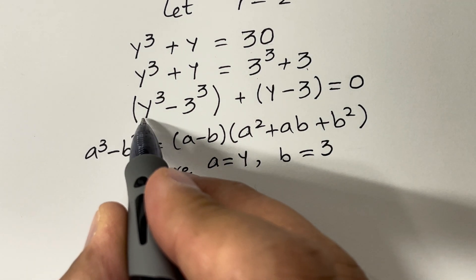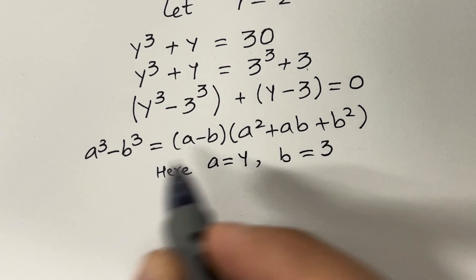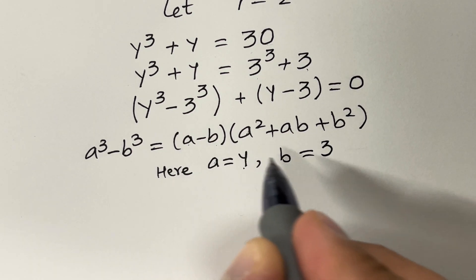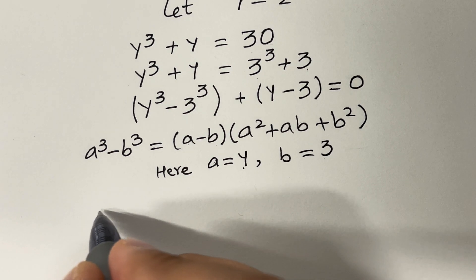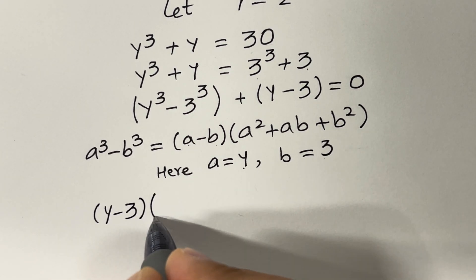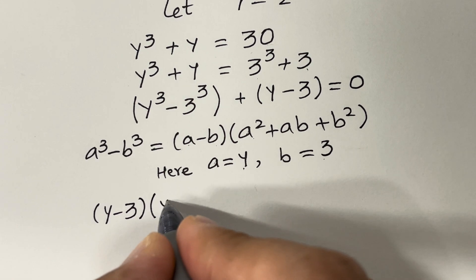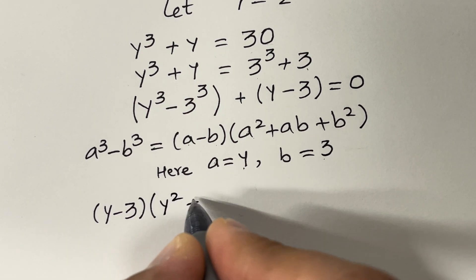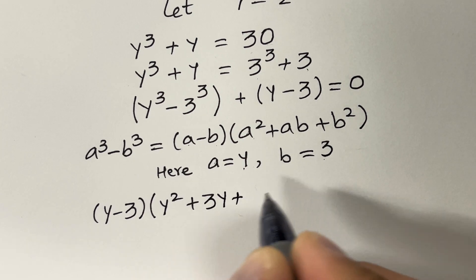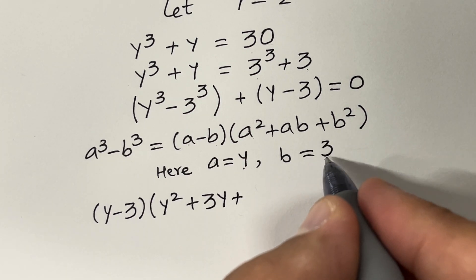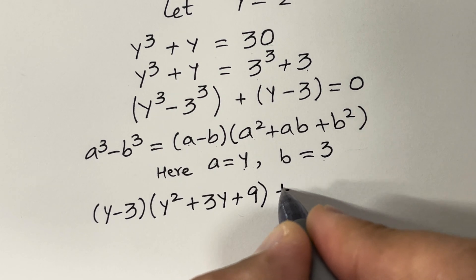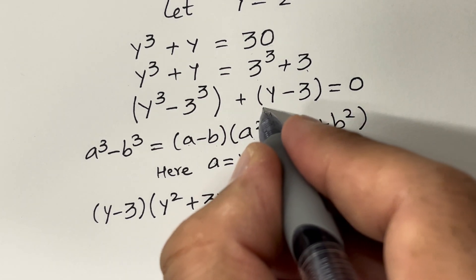Applying the formula: a cubed minus b cubed equals (y minus 3)(y squared plus 3y plus b squared). Since b is 3, b squared is 9, giving us (y minus 3)(y squared plus 3y plus 9).